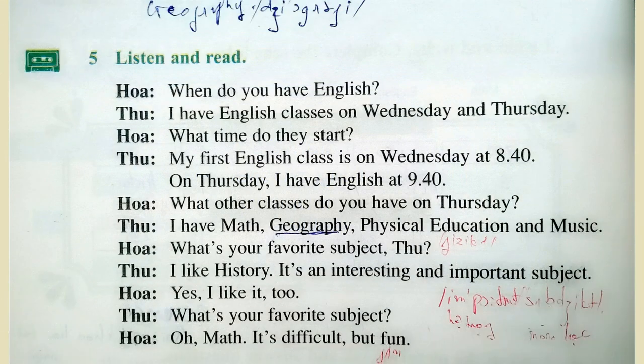Exercise 5: Listen and read. Page 46. When do you have English? I have English classes on Wednesday and Thursday. What time are they? My first English class is on Wednesday at 8.40. On Thursday, I have English at 9.40.